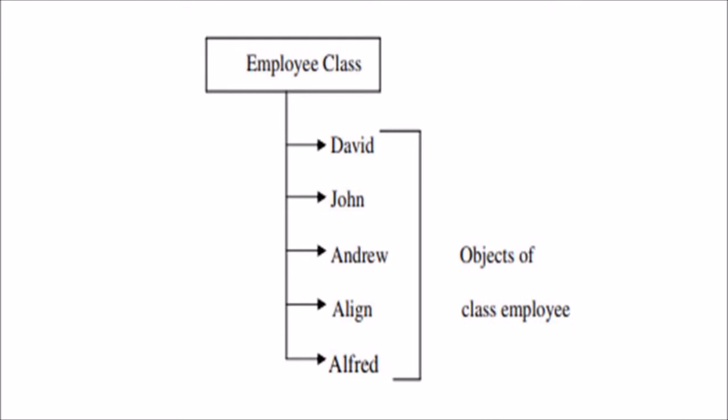For example, consider an employee class. In an employee class, we can see different objects like HR employees, clerical employees, managerial level employees, and sweepers. Each of these objects has its own properties, and there are some common properties for the employee class. As we discussed, each and every object responds to a particular message in a different way.